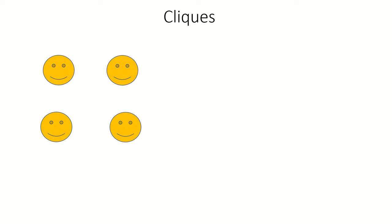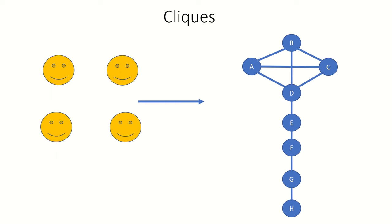In our daily lives, when we hear the word clique, it refers to a group of people that have similar interests and spend time together. However, in graph theory, a clique is a subset of vertices in an undirected graph such that every vertex connects to every other vertex in that subset. In other words, every two vertices in the clique are adjacent.